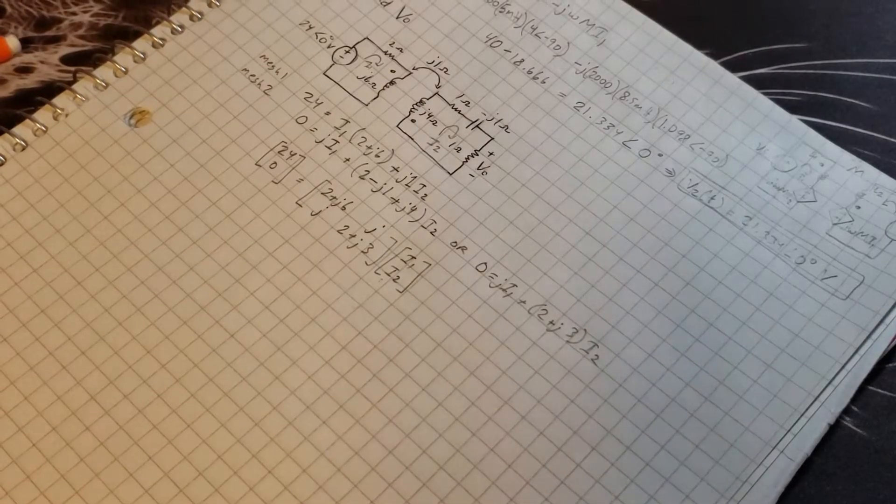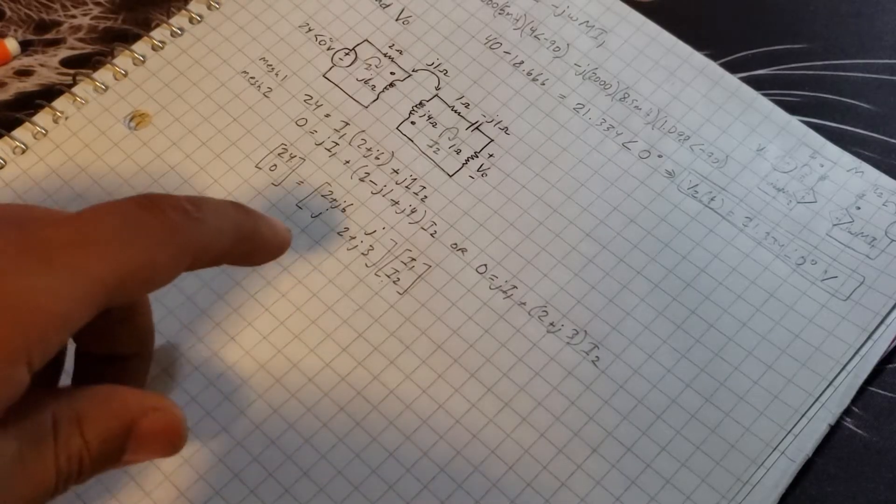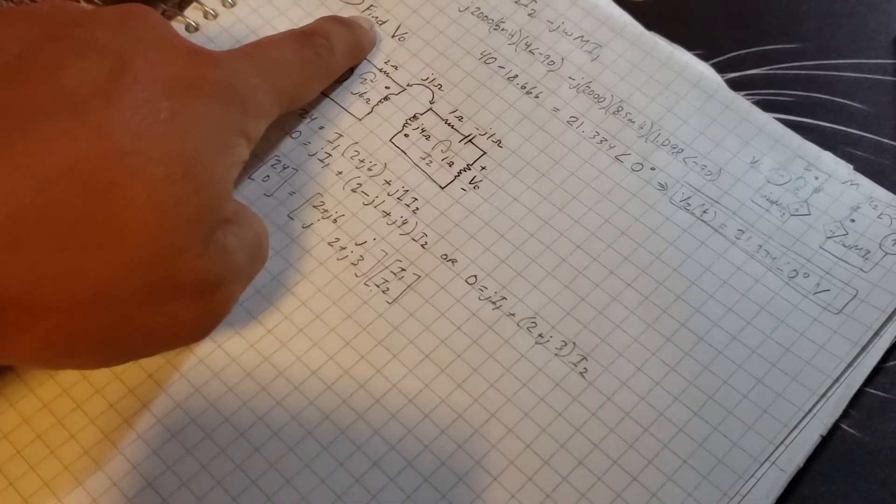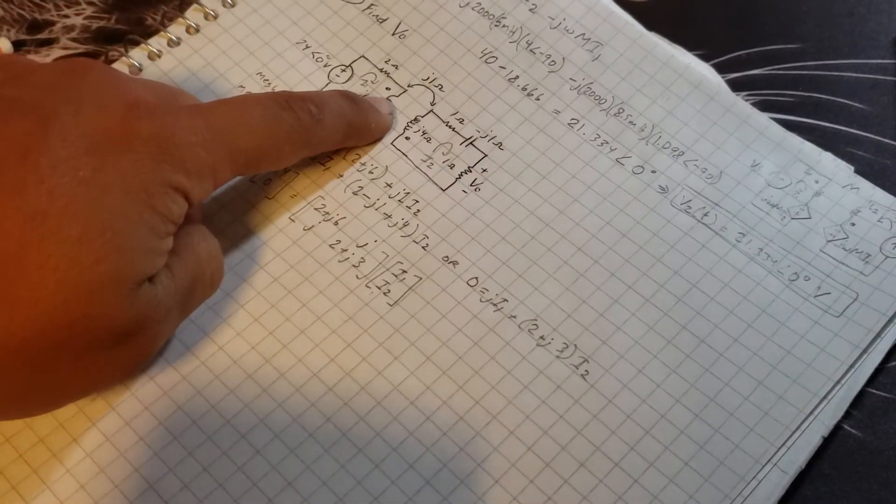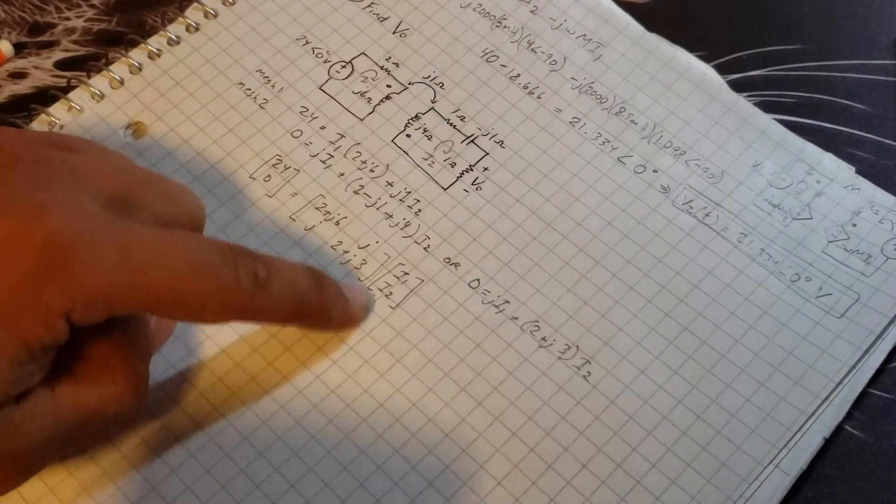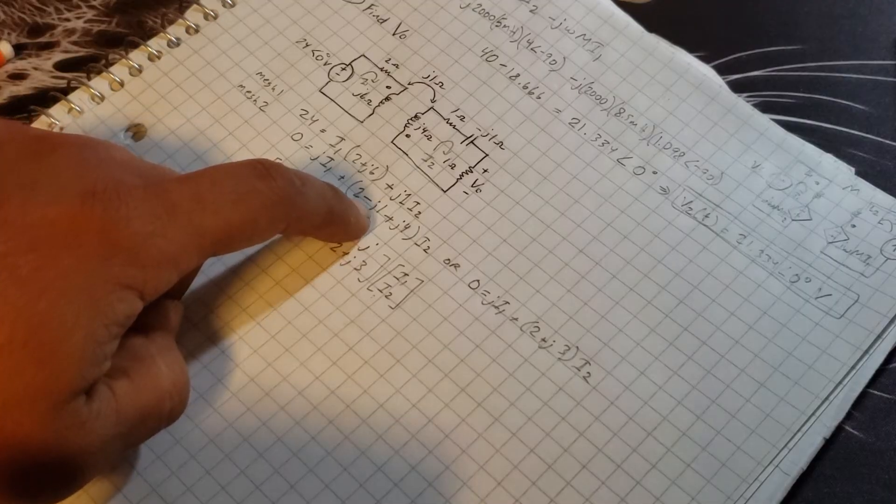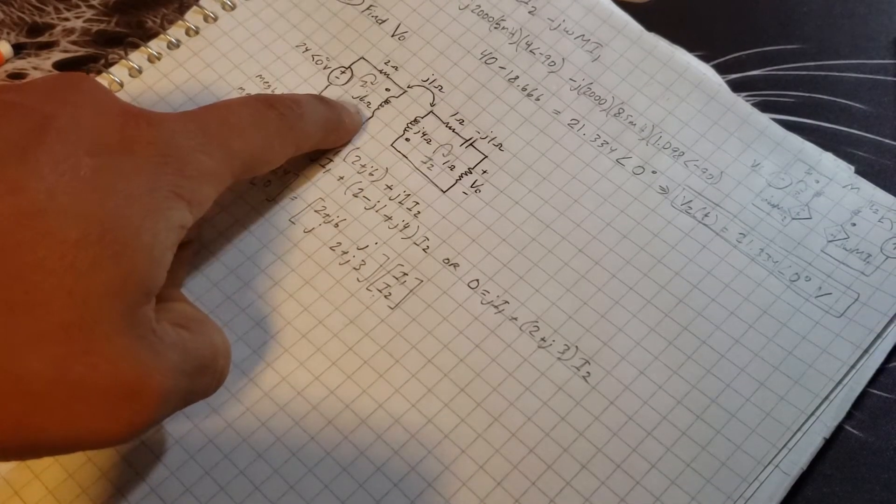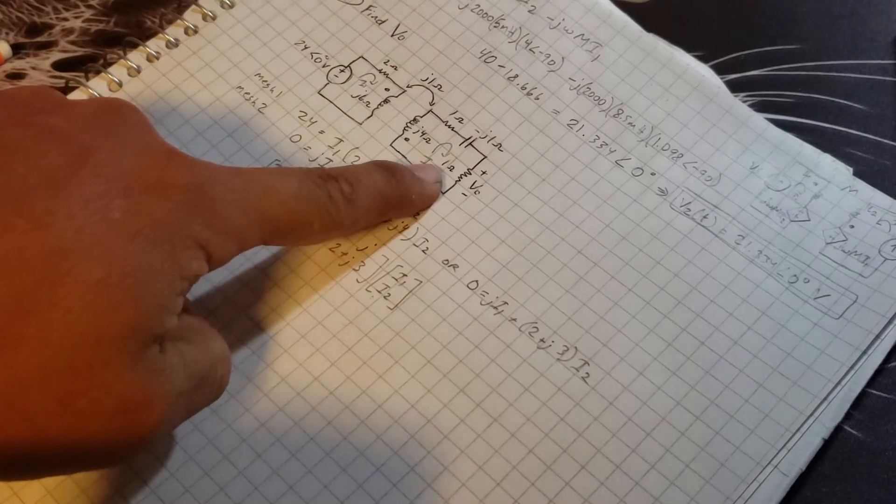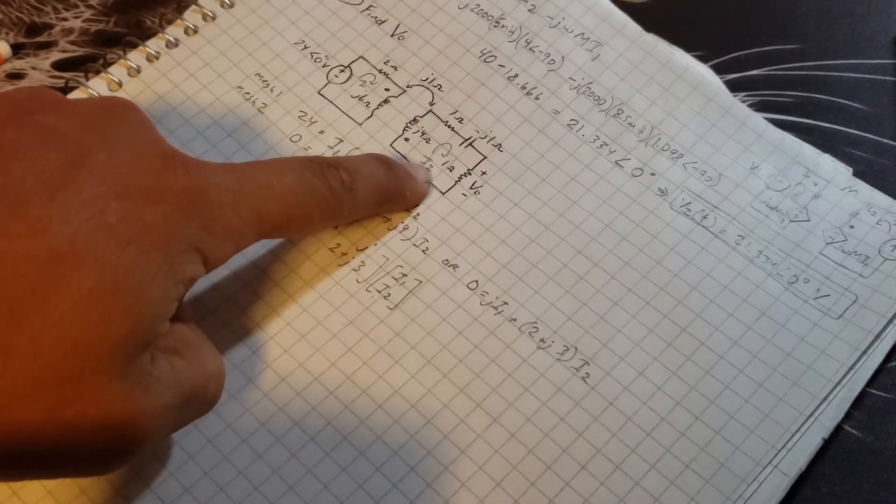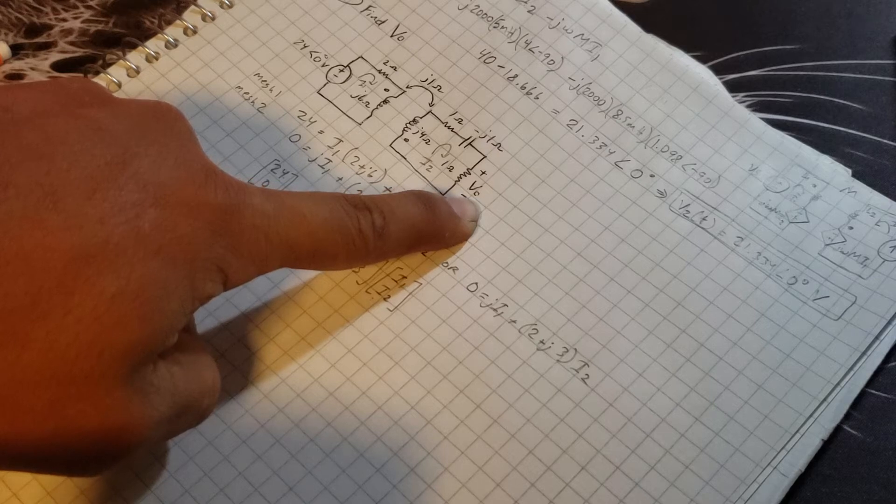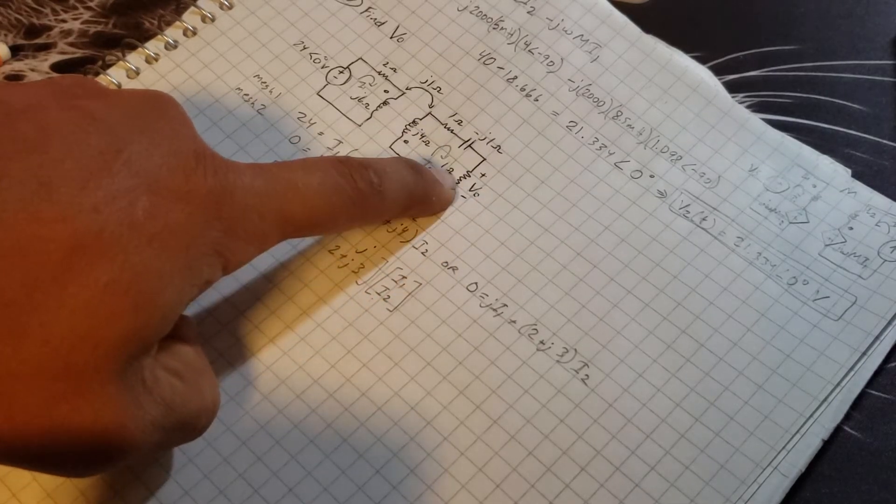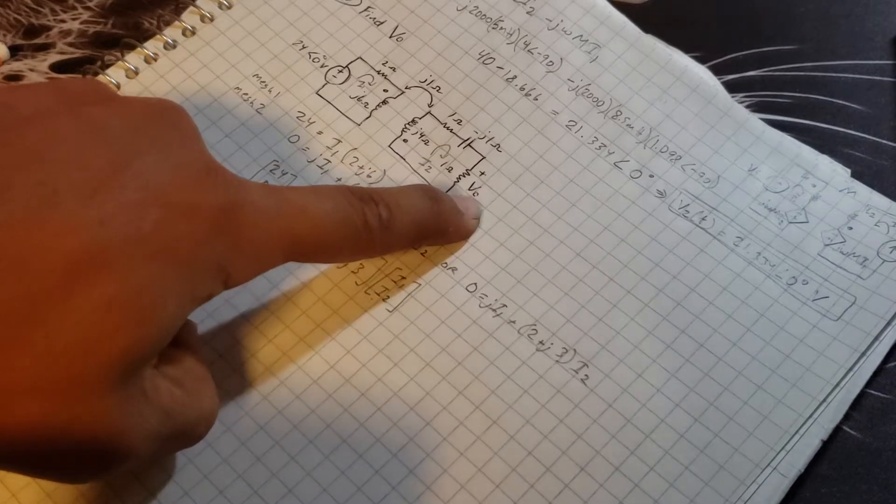Today I'm going to show you how to find current with a problem like this where it's asking you to find V out in circuit analysis, and you're working with imaginary numbers. I've done mesh analysis on the first and second side, and I need i2 because I'm looking for V out. I just need the current i2 multiplied by the resistor one ohm and I will have my V out.